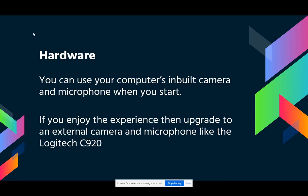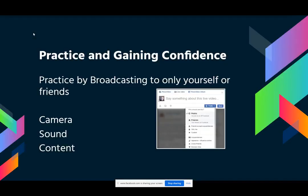When you're starting out, you can use your computer's built-in camera and microphone. Then as you come to enjoy the experience, start upgrading. An external camera and microphone is the first step — something like the Logitech C920 or Logitech Brio. I've got an Audio-Technica microphone and the Logitech Brio, and I've been doing this four years, so there's no rush. Practice by broadcasting to only yourself and friends, and get the three points right: camera, sound, and content.